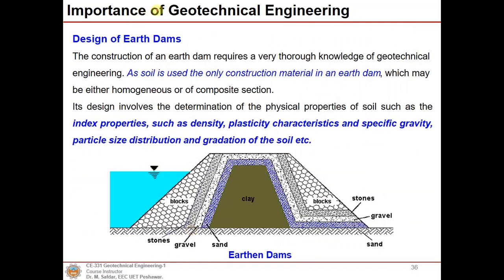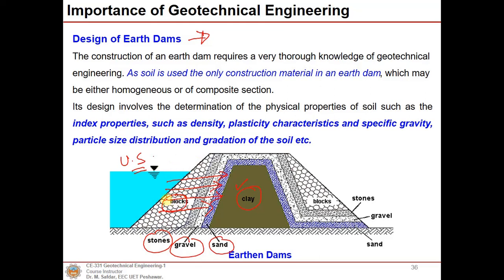For the design of earth dams, clay is used to avoid seepage of upstream stored water, while gravel, sand, and stones provide overall stability to the earthen dam. Understanding index properties, density, plasticity characteristics, specific gravity, particle size distribution, and variation of the soil is important in designing earthen dams.